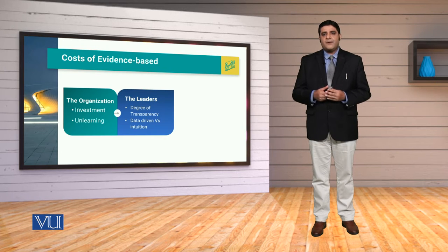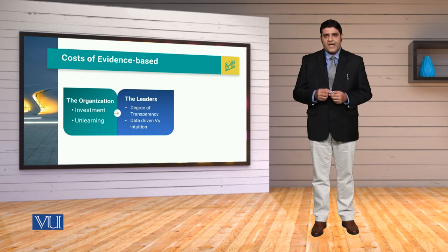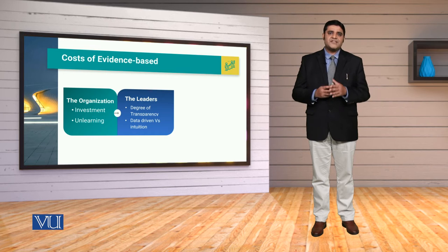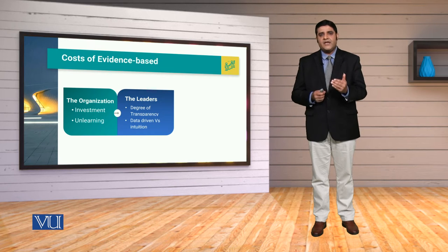Second level per, jab hum cost ki baat karte hain, toh it is associated with the leaders. Ab leaders ke saath jo cost associated hai, that is for the data collection and obviously the leaders need to be transparent. Unko transparent hona padega, taake woh open book management ki tarah, tamam logon se share kar sakein, ke unhone kis evidence ko, kis problem ke liye, kyun use kiya. So us transparent hone ke liye, us evidence-based hone ke liye, there are certain circumstances which they have to go through.